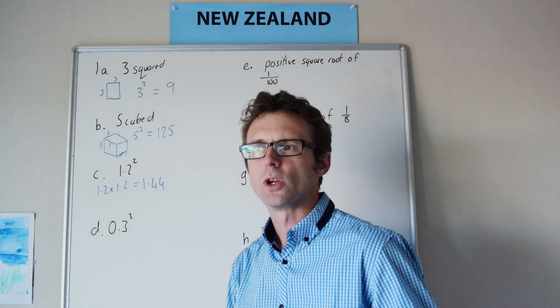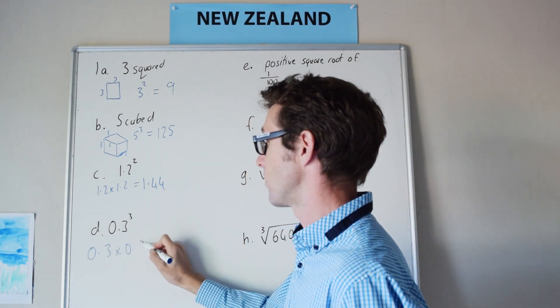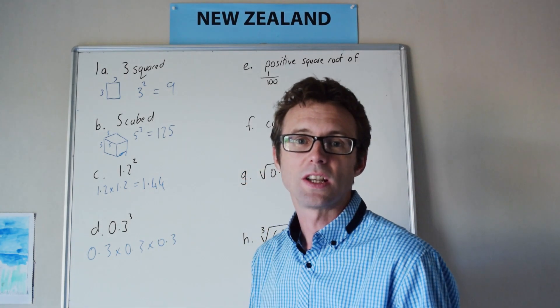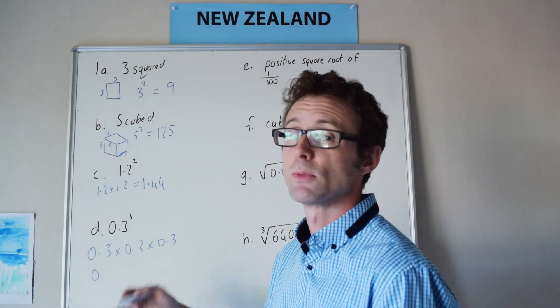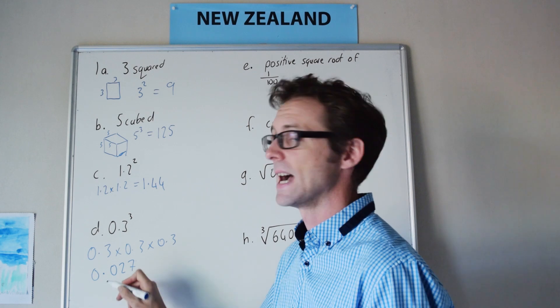0.3 cubed, this means 0.3 times 0.3 times 0.3. 3 times 3 times 3 is 27, but we're going to have three numbers behind the decimal place, so 0.027 is our answer here.